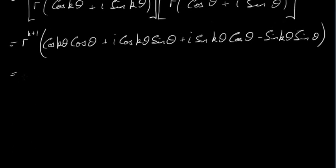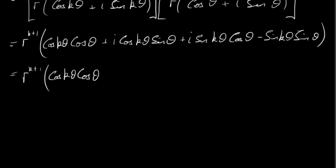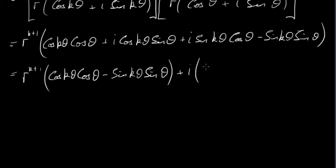We end up with r^(k+1). Now I'm going to group the terms: putting terms without i together and terms with i together. The real part is cos kθ · cos θ minus sin kθ · sin θ. Then taking the i outside the bracket for the imaginary part: i(cos kθ · sin θ + sin kθ · cos θ).